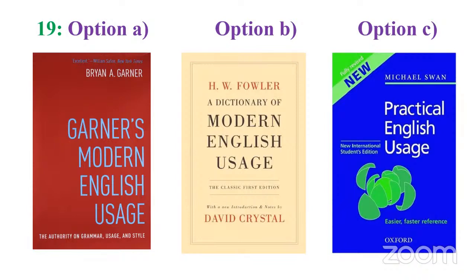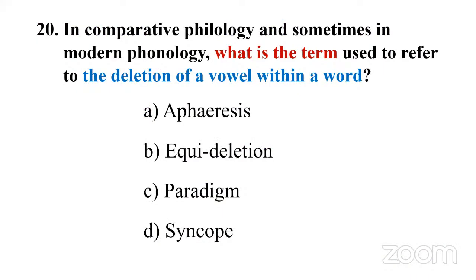Question 20: In comparative philology and modern phonology, what is the term used to refer to the deletion of a vowel within a word? Options: A) apheresis, B) equideletion, C) paradigm, D) syncope. Do not go for the obvious — option B 'equideletion' sounds like deletion but is not a real term. The answer is D: syncope.